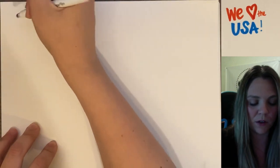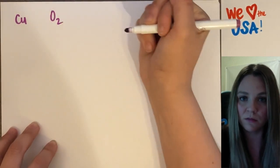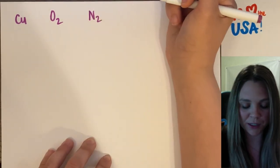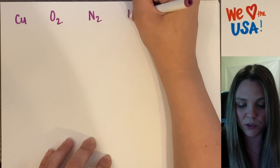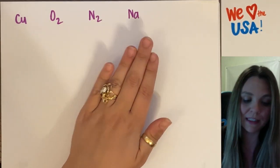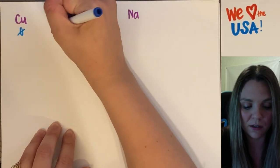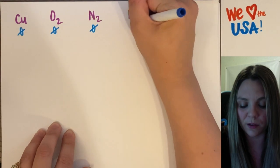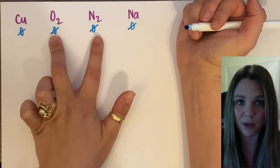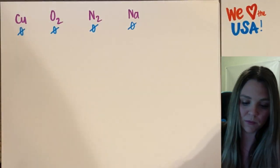So if I had copper, oxygen gas, nitrogen gas, or sodium all by itself — all of these are just elements in their elemental state. That means their oxidation number is zero for all of them. They're pure elements in their elemental state. Don't forget some elements are diatomic — don't let that throw you off.